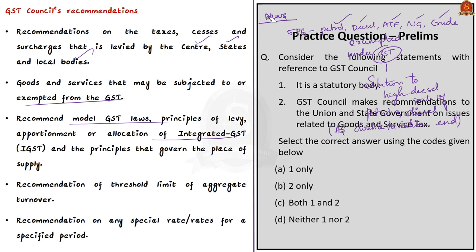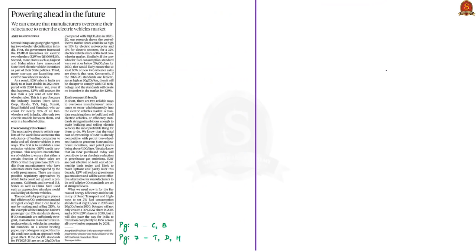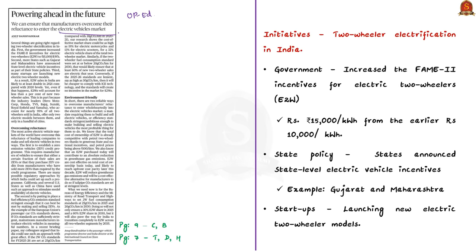In this discussion we saw what direct tax and indirect tax are, what GST is, and some important points about the Goods and Services Tax Council, including its functions and the matters on which it can make recommendations. Now let us take up a column article from the open page dealing with the issue of electric vehicles. India is progressing in the electric vehicle industry, but the rate of progression is very low. The author highlights two important strategies to increase this rate of progression.